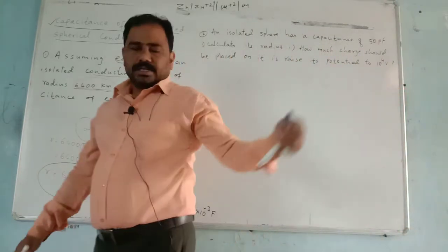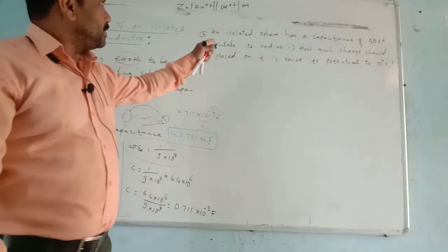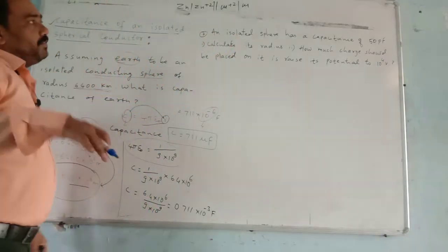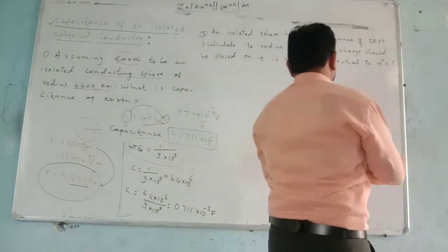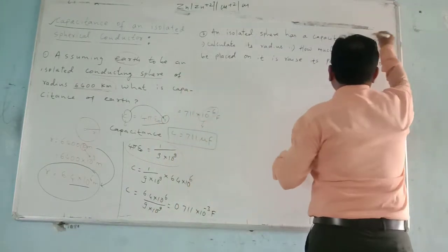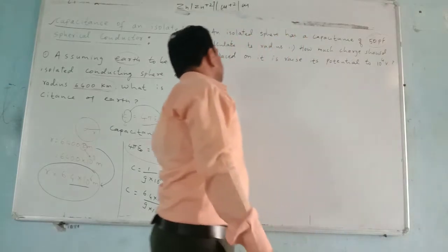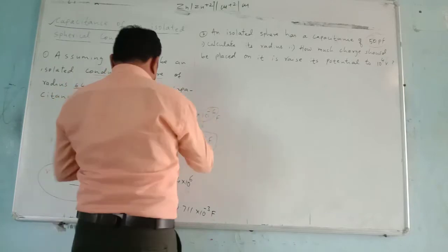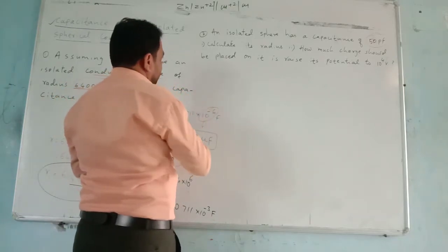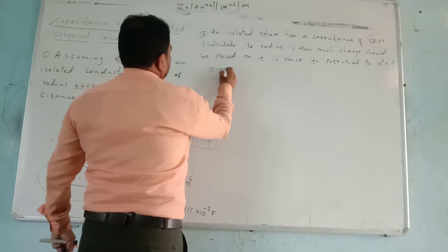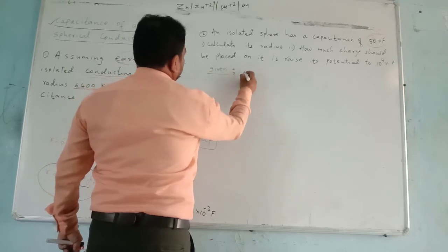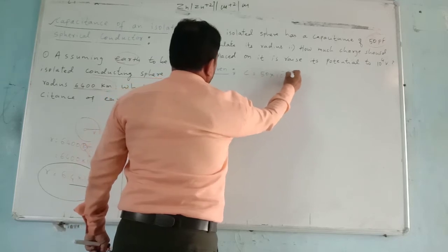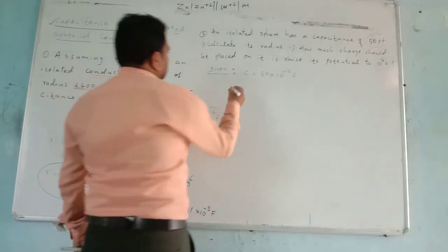Now let us look at the second problem. An isolated sphere has a capacitance of 50 picofarad. The given capacitance is 50 picofarad, where pico means 10⁻¹², so C = 50 × 10⁻¹² farad. We need to calculate its radius r.